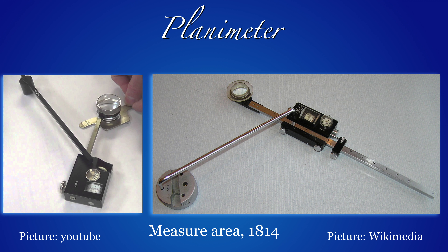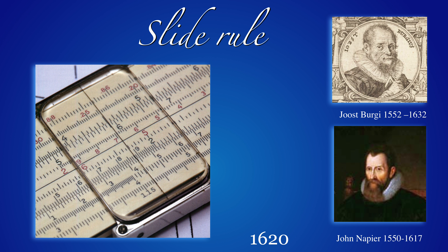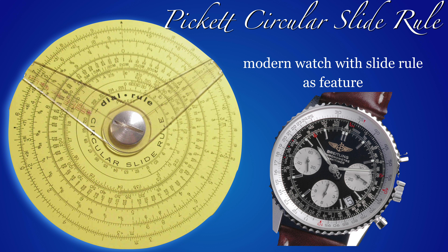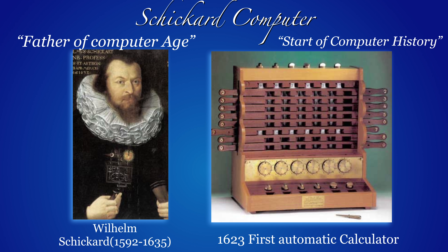The planimeter is another analogue computer that allows computing area. It was invented in the early 19th century by a Bavarian engineer and is based on Green's integral theorem. The slide rule is also related to mathematics, using logarithms invented by Joost Bürgi and John Napier — it allows multiplying numbers. There are also circular versions; I built a circular one myself in high school. You can even buy watches containing a slide rule for entertainment or coolness.